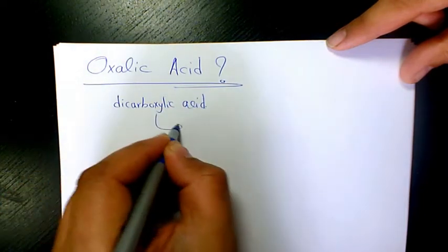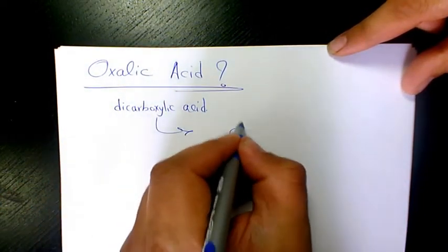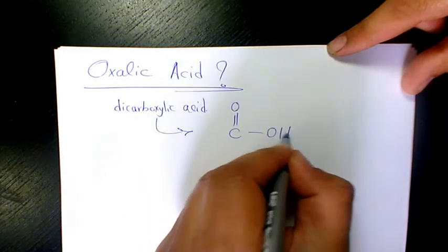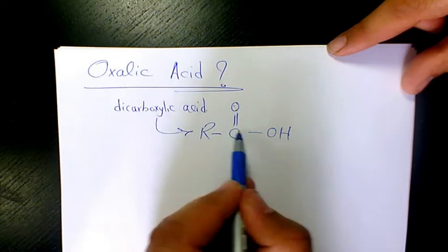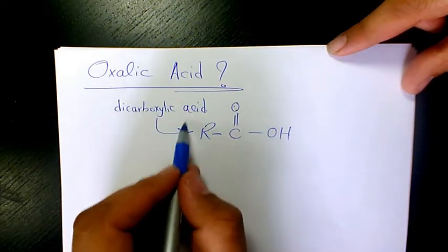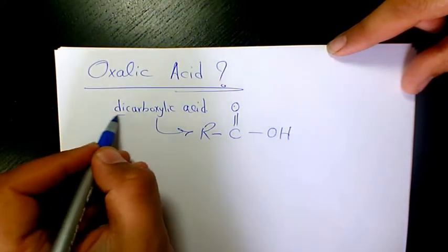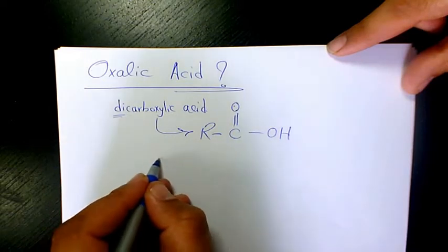What does carboxylic acid mean in organic chemistry? Whenever you have C double bond with oxygen and OH, we are dealing with organic acid. Dicarboxylic acid means that we are dealing with two carboxylic functional groups.